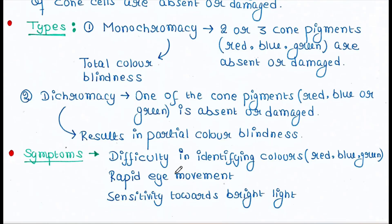The symptoms of this disease include difficulty identifying colors such as red, blue, and green, rapid eye movement, and sensitivity towards bright light.